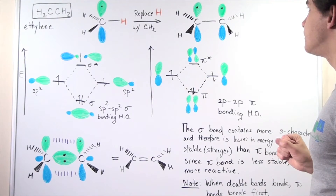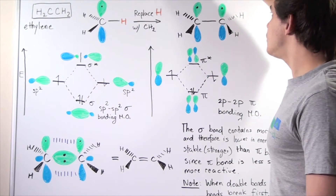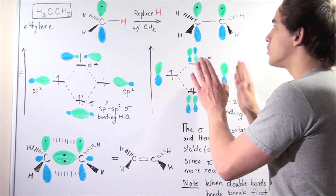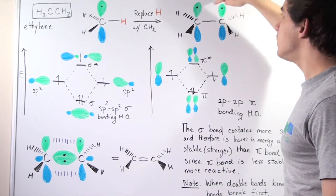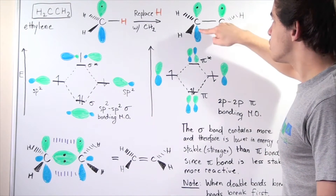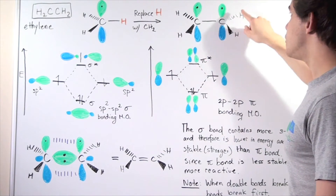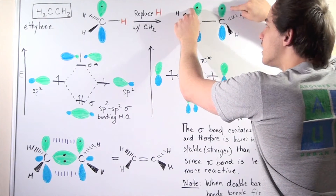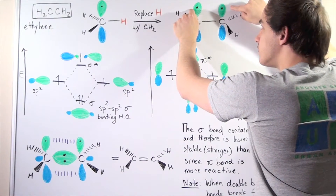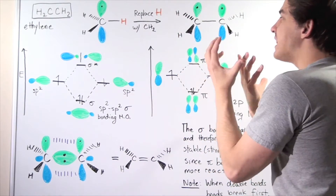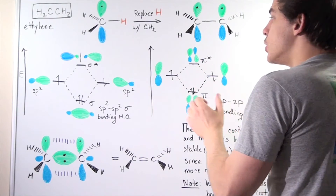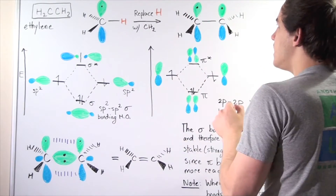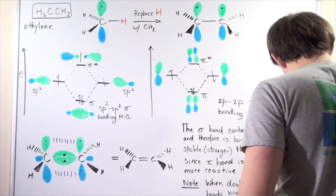Notice we have these two 2p orbitals, and they're both parallel to one another — perpendicular to either of the C-H bonds. Because these orbitals are parallel and have the same exact energy, they will create an overlapping condition, just as we saw with the sp2 orbitals. So let's combine these 2p orbitals.